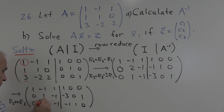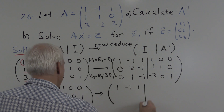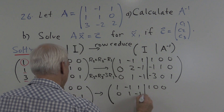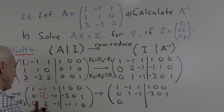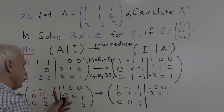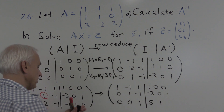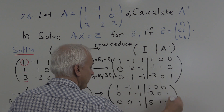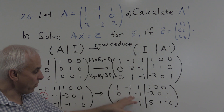Now we're in a happy situation because we have a 1 in the pivot place where we want it, and we're going to use that to get rid of the 2 below it. Row 1 stays: 1, minus 1, 1, 1, 0, 0. Row 2 stays where it is. We're going to take row 3 minus 2 times row 2. So 2 minus 2 times 1 is 0. Minus 1 minus 2 times minus 1 gives 1. Minus 1 plus 6 gives 5. 1 minus 2 times 0 is 1, and 0 minus 2 times 1 is minus 2. So we're halfway through, and we've got it in row echelon form.